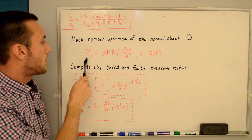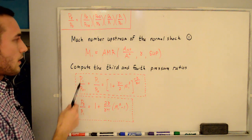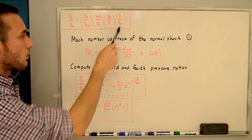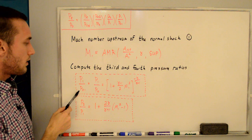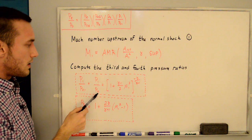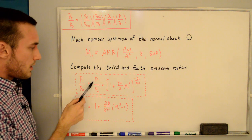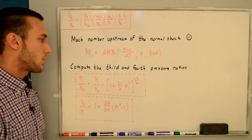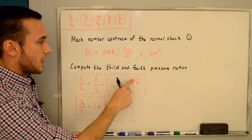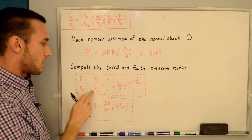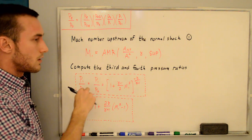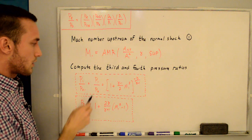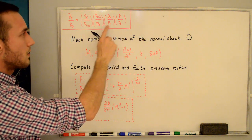Now that we know M1, we can solve for the third and fourth pressure ratios. For P1/P0, note that P0 equals P01, so P1/P0 equals the familiar stagnation-to-static ratio with a negative exponent since it's static to stagnation. We just plug in M1 and gamma.